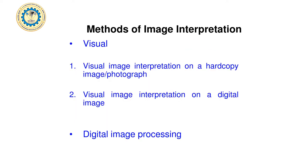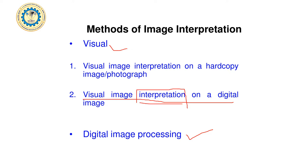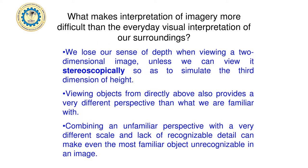There are two methods of interpretation — visual method and digital image processing. The visual method is an old method requiring a hard copy of the image, and since every person interprets images their own way, it becomes a difficult task. What we do instead is interpret images visually but with the help of softwares, using digital images for clarity.